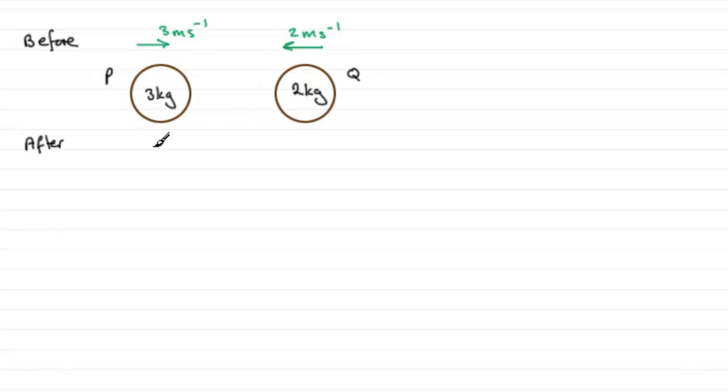Now if I didn't get this right, it doesn't matter. Let the mathematics tell you that you've got it in the wrong direction - you'll end up with a negative sign, a negative velocity if that was the case. So they both have to move off to the right.